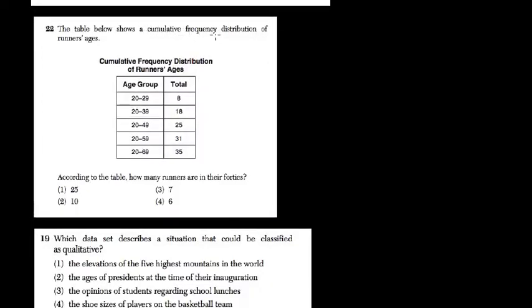In the table below, there's a cumulative frequency distribution of runners' ages. According to the table, how many runners are in their 40s?